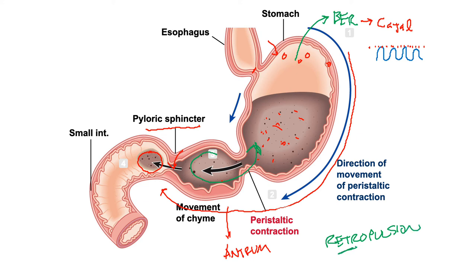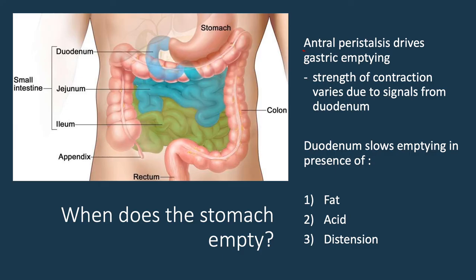It's these antral peristaltic contractions that drive gastric emptying — with each contraction, a little chyme is pushed through. Increasing the strength of antral contractions pushes more chyme through. The strength of these contractions depends on signals from the duodenum — the first section of small intestine attached to the stomach, followed by the jejunum and ileum. The duodenum helps slow gastric emptying in the presence of fat, acid, and distension.